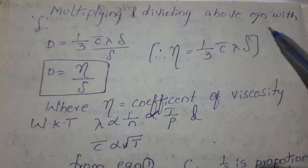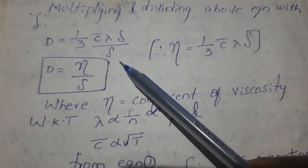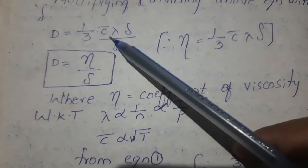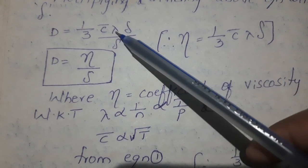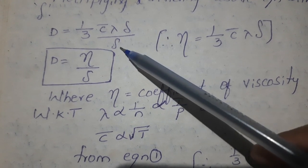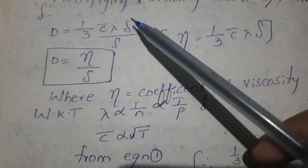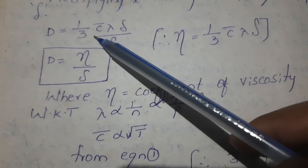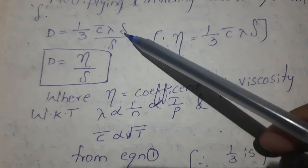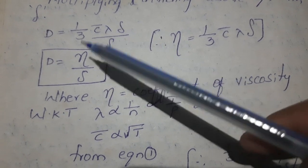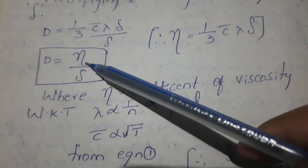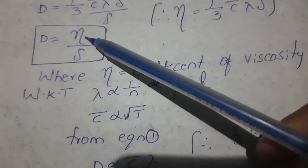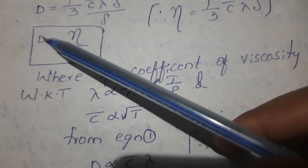Multiplying and dividing equation one by rho, we get D equal to 1 by 3 c-bar lambda times rho divided by rho, which gives D equal to eta by rho. This is the relation between the coefficient of viscosity eta and the diffusion coefficient D.